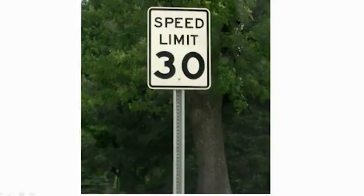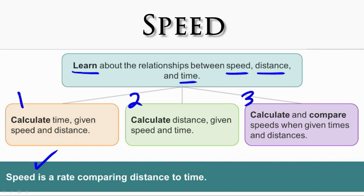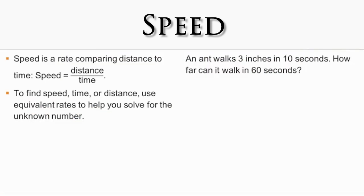Let's look at our lesson question: how can you solve problems about speed? You have learned how to solve for time or distance, and how to find and compare speeds of different objects. Our main lesson goal is to understand the relationship between speed, distance, and time. First, we learned to calculate time given speed and distance. Second, to calculate distance given speed and time. Third, to calculate and compare speeds given times and distances. Remember, speed is a rate comparing distance to time. Key concept one: the speed formula — speed equals distance over time. Key concept two: to find speed, time, or distance, use equivalent rates to solve for the unknown.